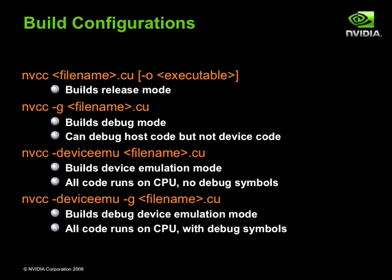There are four different build configurations one can use when developing CUDA code. Using NVCC with no flags builds release mode. The -G flag can be used to build debug mode. The -device-EMU flag builds device emulation mode, where all code runs on the CPU but the executable contains no debugging symbols. The -G and -device-EMU flags can be combined to build debug device emulation mode, where all code runs on the CPU and all code contains debug symbols.